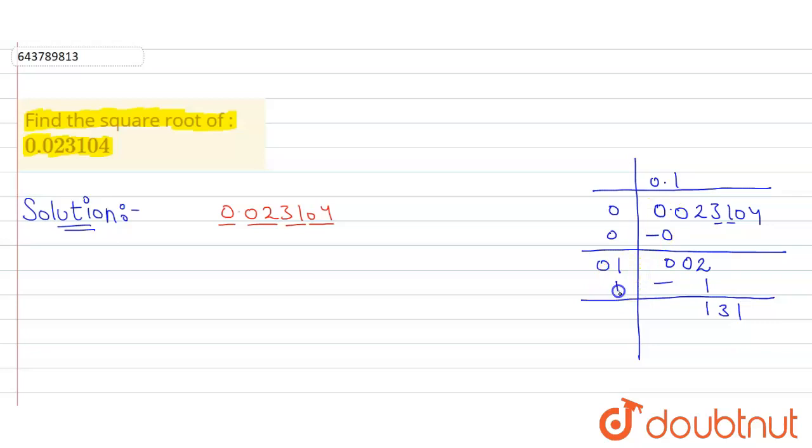Now 1 plus 1 is 2. Now 21 into 1 is 21, 22 into 2 is 44, 23 into 3 is 69, 24 into 4 is 96, and 25 into 5